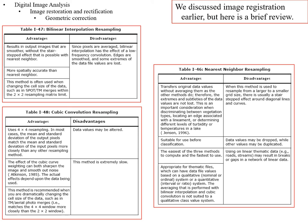Bilinear interpolation resampling results in output images that are smoother without the stair-step or jagged effect from nearest neighbor. However, since the pixels are averaged, you essentially smooth the image — edges are smooth and some extreme data values are lost. The image will be more spatially accurate than nearest neighbor, and it's often used when changing the cell size of the data, such as going from SPOT at 10 meters to TM at 30 meters.